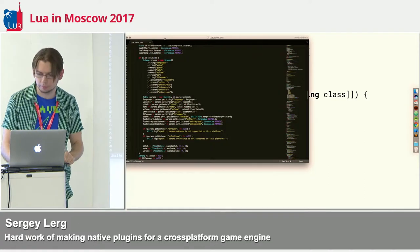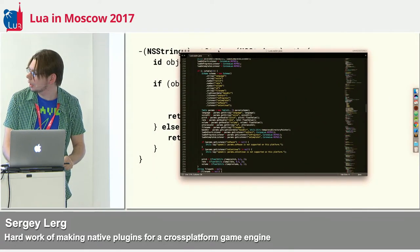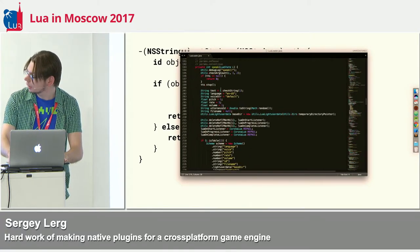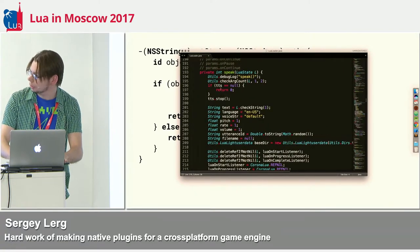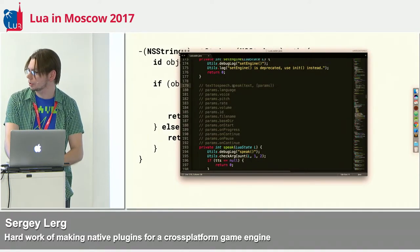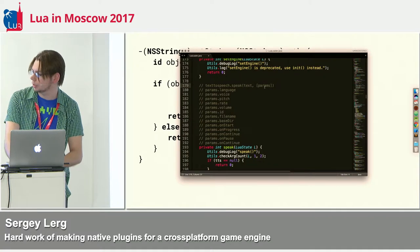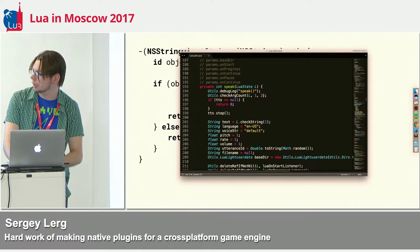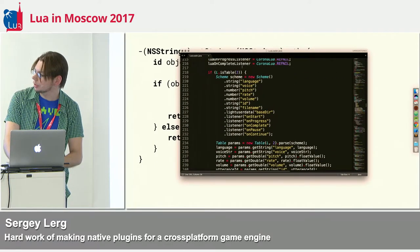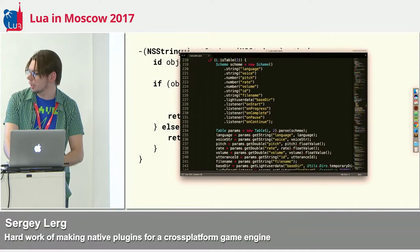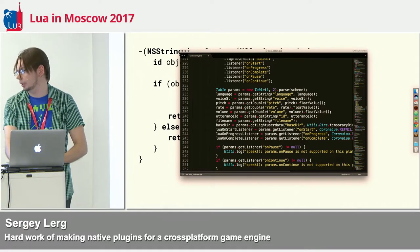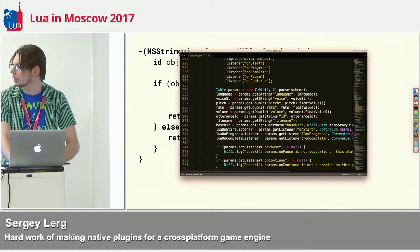Here's a piece of code from my text-to-speech plugin showing how I use this in practice. I have a simple Lua cheat sheet of how I call my function: speak with text and optional parameters. Then I check the number of arguments, provide some defaults, define the schemes I want to parse the table with, then parse them with very little effort. It works really well for all my plugins.